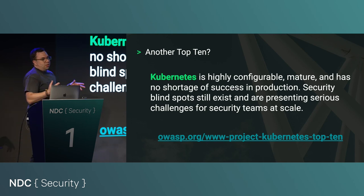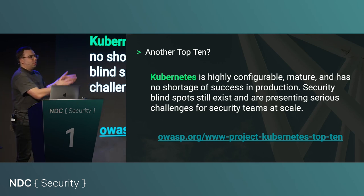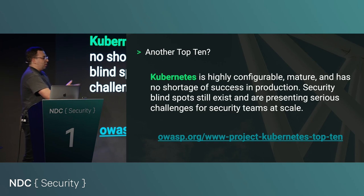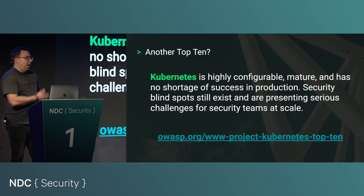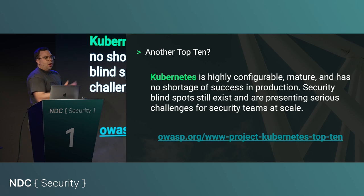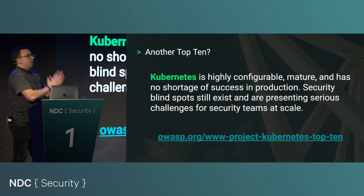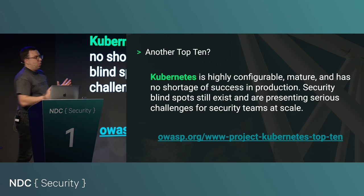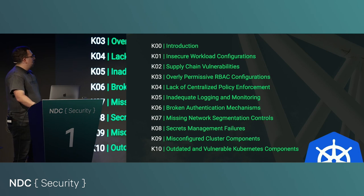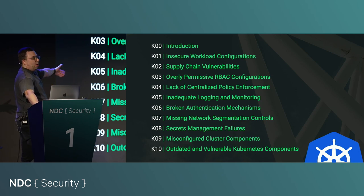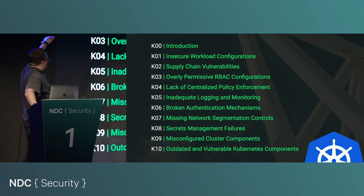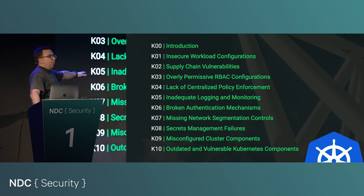Kubernetes is such a complex ecosystem that people focus on the ease of deploying applications — that's why it's so successful. But at scale there are a lot of security concerns. Here is the OWASP Top 10 for Kubernetes, starting at the top with workload configurations and ending with potentially insecure Kubernetes components. Don't just trust everything you pull off the internet.